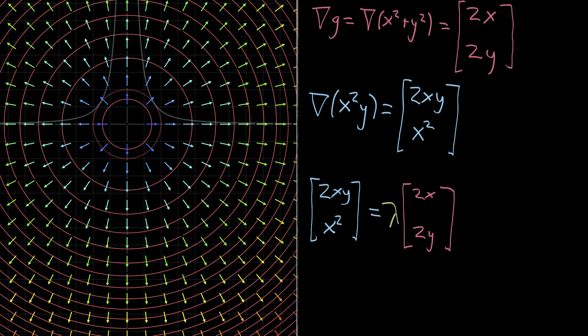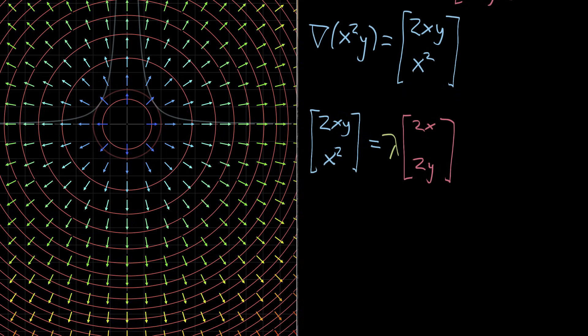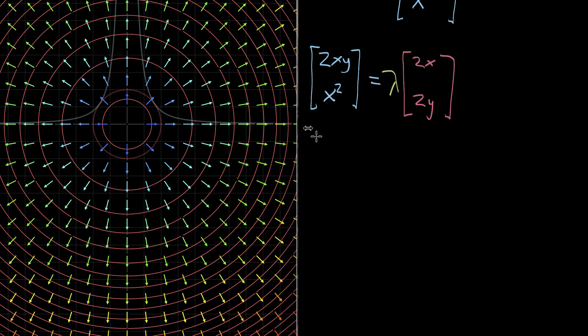And if you want, you can think about this as two separate equations. I mean, right now it's one equation with vectors. But really what this is saying is you've got two separate equations. 2 times xy is equal to lambda times 2x.